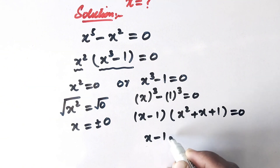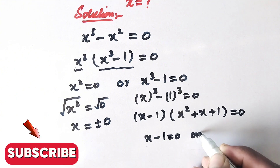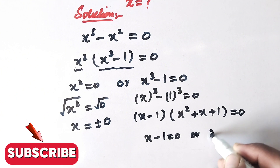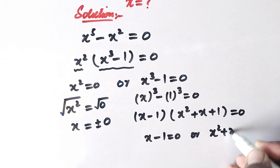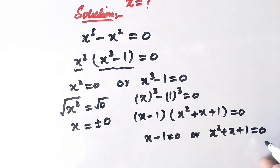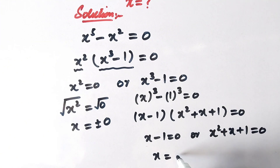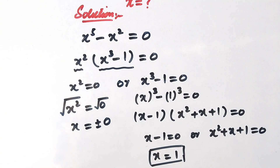So here again there are two factors equal to 0: that will be x minus 1 equal to 0, or x squared plus x plus 1 equal to 0. So here x will be equal to positive 1.